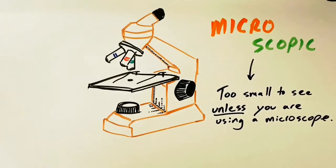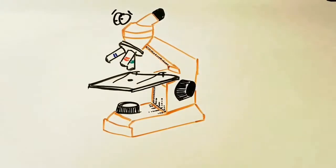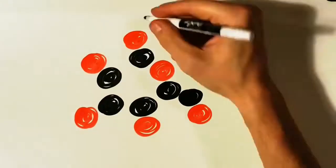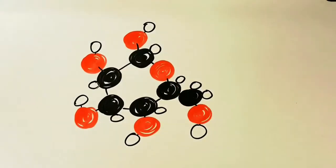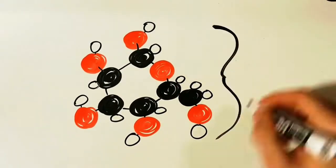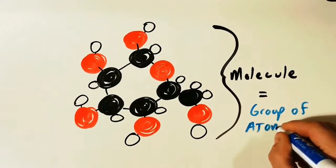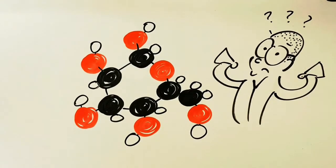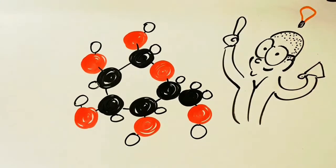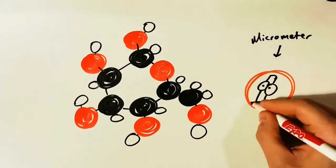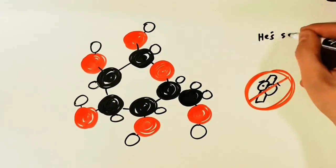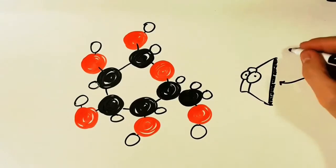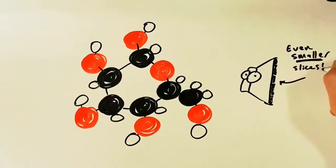What about something really tiny like atoms — can a microscope see those? They're actually too small even for a microscope. This brings us back to our extremely tiny object, the sugar molecule. A molecule is really just a group of atoms bonded together, which themselves are extremely tiny. How are we supposed to describe something as small as a sugar molecule? Even a micrometer is too big.